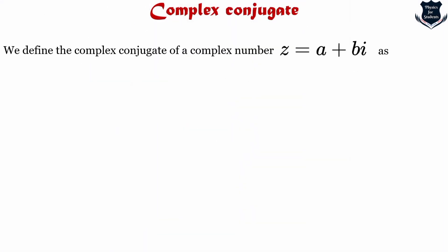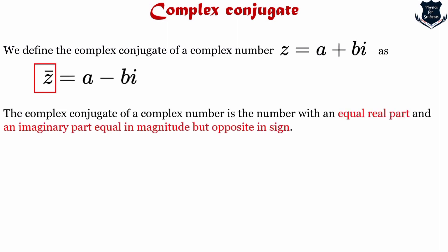We define the complex conjugate as the number with an equal real part and an imaginary part equal in magnitude but opposite in sign.